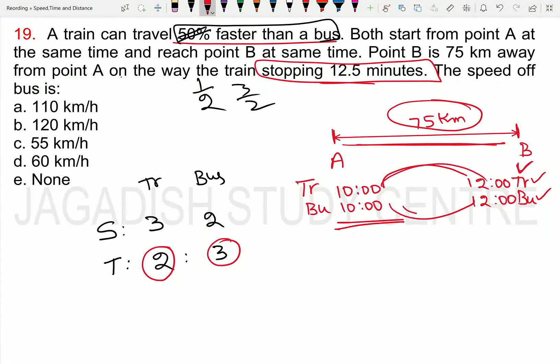But the train rests for some time. If the train takes 2 units of time and the bus takes 3 units of time, the train rests for 1 unit. One unit equals 12.5 minutes. So, the train takes 2 units, which is 25 minutes.